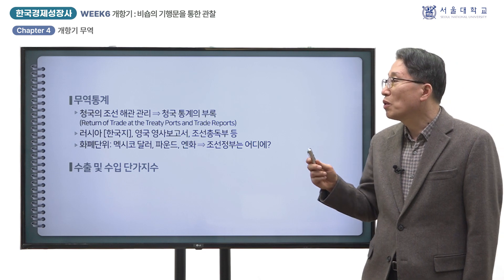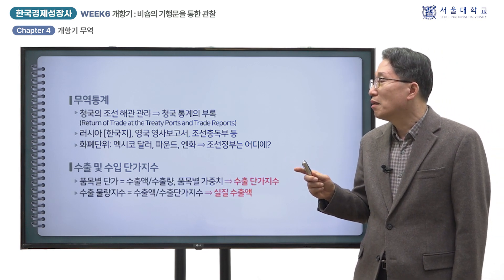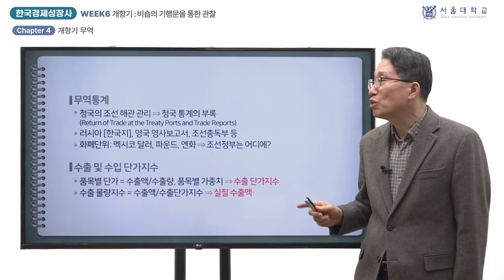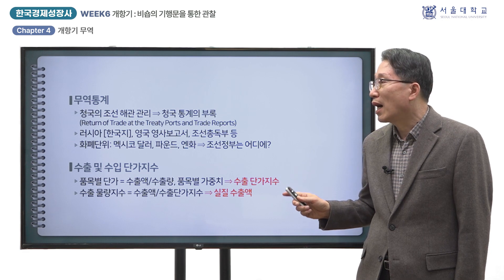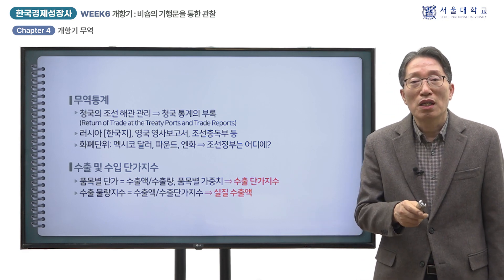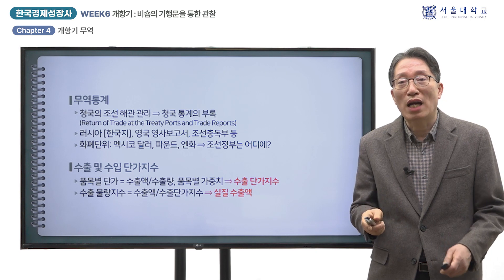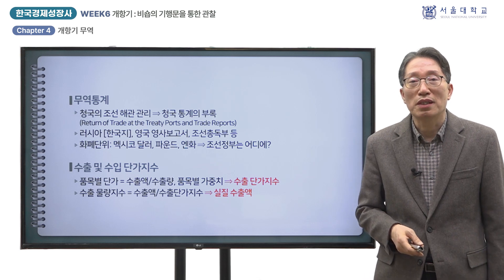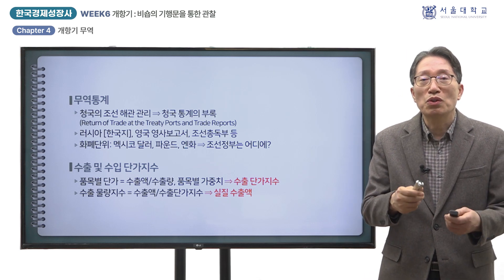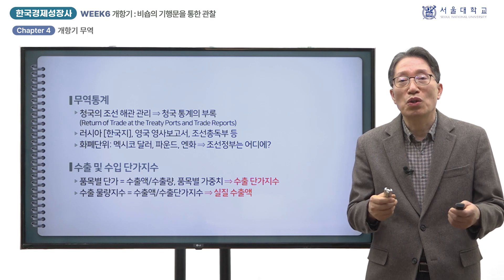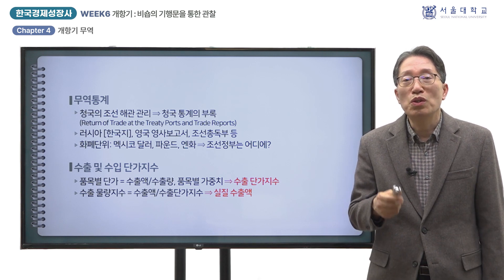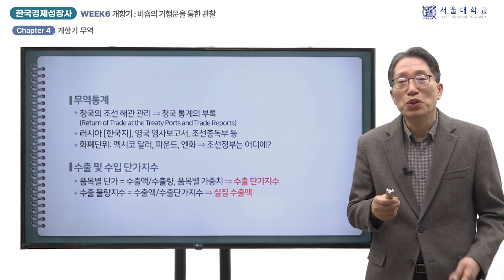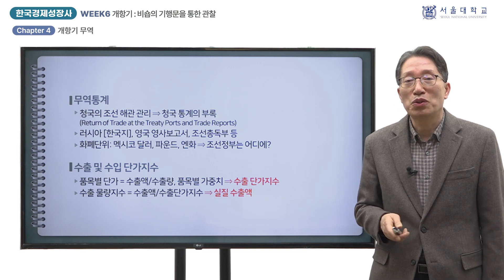이들 무역통계는 품목별로 수량과 금액을 보여줍니다. 품목별 수출액 또는 수입액을 각 수량으로 나누어주면 수출 또는 수입의 품목별 단가를 구할 수 있습니다. 각 품목이 무역액에서 차지하는 비중을 가중치로 본다면, 품목별 단가를 이용해서 수출 또는 수입 단가 지수를 구할 수 있으며, 수출액 또는 수입액을 각각의 단가 지수로 나누면 물량 지수가 됩니다. 이것은 가격의 변화를 제거해서 무역이 실제로 얼마나 빠르게 증가했는지를 보여줍니다.